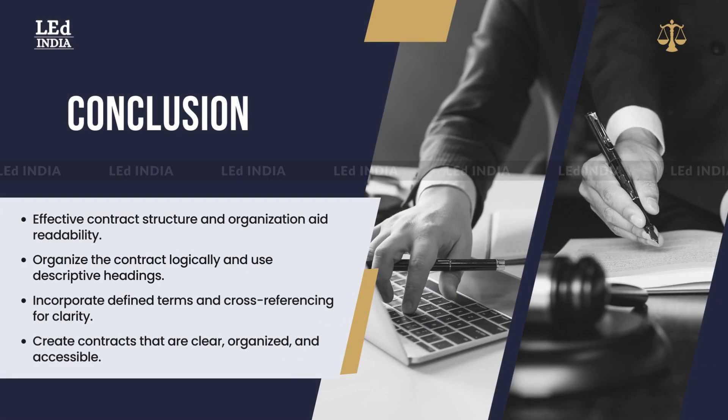In this chapter, we have explored key considerations for contract structure and organization, including organizing the contract for readability and comprehension, ensuring a logical flow and sequencing of clauses, utilizing headings, subheadings, and numbering systems, and incorporating defined terms and cross-referencing provisions. By implementing these considerations, you will create contracts that are clear, organized, and accessible to all parties involved.